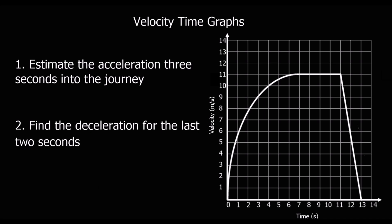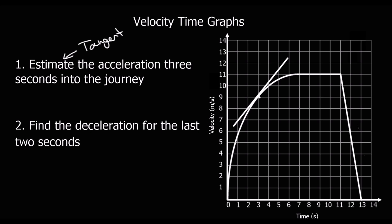Here is a different kind of example with a curved graph. We need to estimate the acceleration 3 seconds into the journey. To do that we draw a tangent — a straight line that just touches the curve at that point, representing the gradient at that exact point. After 3 seconds, we draw an accurate tangent at that point and then extend it to find its gradient.